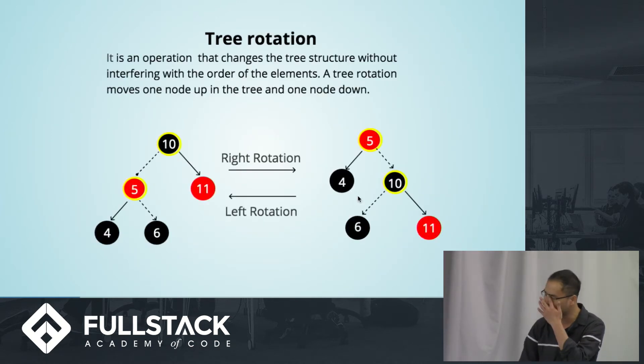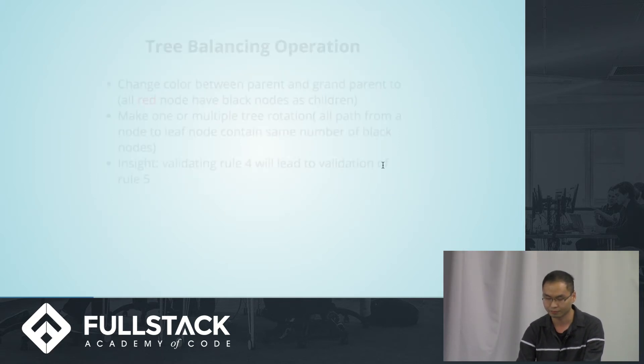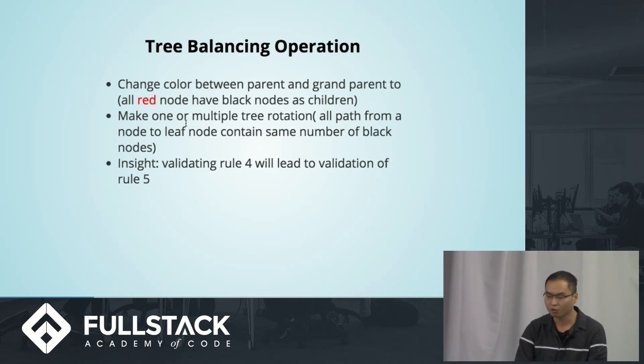Before we dive into the invalid case of the red-black tree, I want to just go over the simple tree operation you gotta perform later on. A tree operation is just a right rotation. You just need to unbind the target node and rebind his parent as his child, and hand in the target child back to the parent node. And vice versa, you just do the same operation for the left rotation. For tree balancing operation, there are only two different kinds of strategy: changing the color between parent and grandparent, and make some tree rotation to balance the tree. When you satisfy rule 4, you always satisfy rule 5.